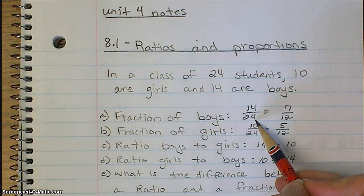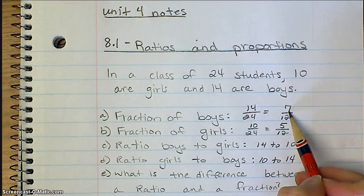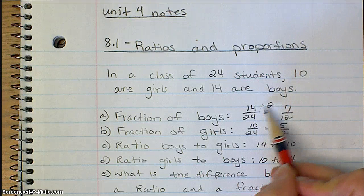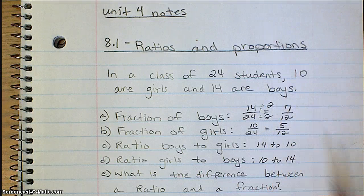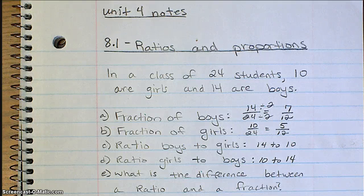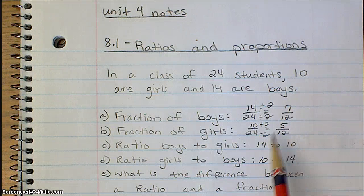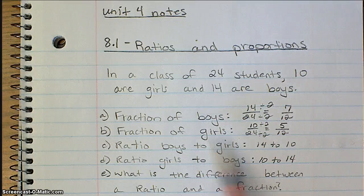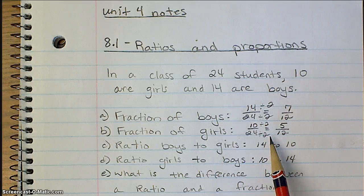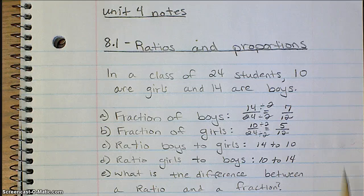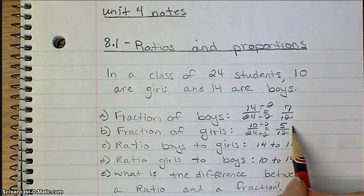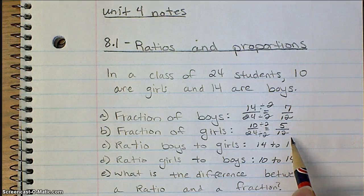Don't forget that whenever you have a fraction, it can always be simplified if there is a common factor. So for example here, I divided the numerator and denominator both by 2. You could also do the same thing with the fraction in part b, 10 to 24. They're both even, so they can be divided by 2. You know that you cannot simplify anymore when both the numbers don't have a common factor.